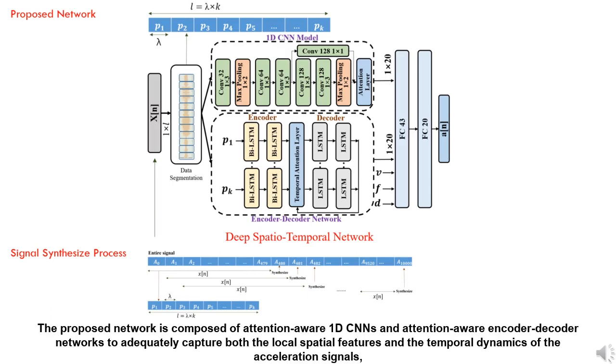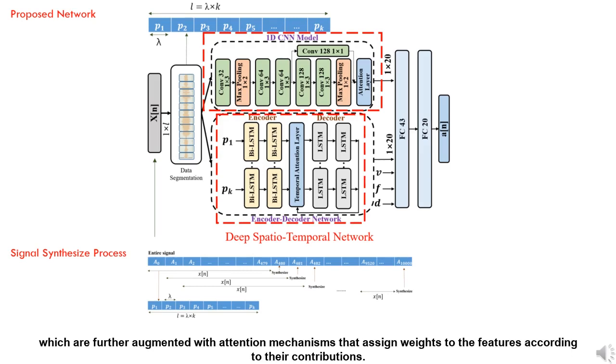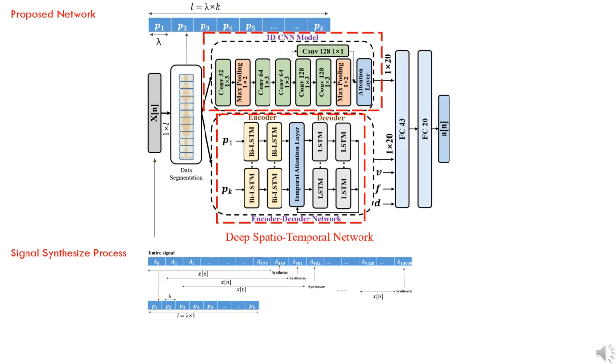The proposed network is composed of Attention Hour 1D CNN and Attention Hour encoder-decoder networks to adequately capture both the local spatial features and the temporal dynamics of the acceleration signals, which are further augmented with attention mechanisms that assign weights to the features according to their contributions.